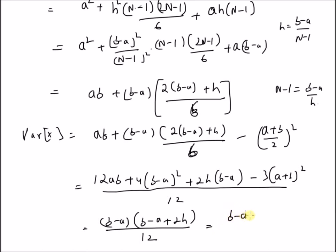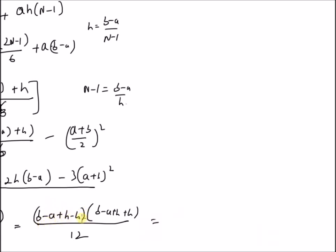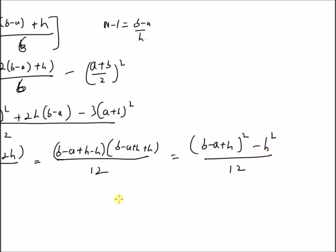This can also be written as b minus a plus h minus h, into b minus a plus h plus h, divided by 12. By letting A equal b minus a plus h and B equal h, this becomes A squared minus B squared divided by 12, that is b minus a plus h whole square minus h squared divided by 12. Therefore, for a discrete uniform random variable with step size h, the variance is b minus a plus h whole squared minus h squared divided by 12. For natural numbers where h equals 1, this changes to b minus a plus 1 whole squared minus 1 by 12. For continuous values, h approaches 0 and we get b minus a whole squared by 12 for a continuous uniform random variable.